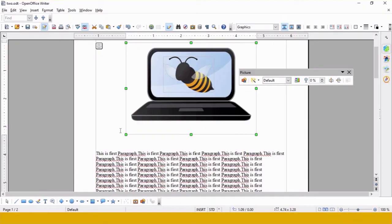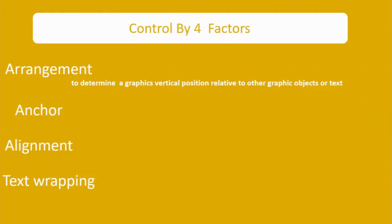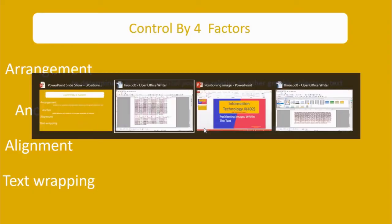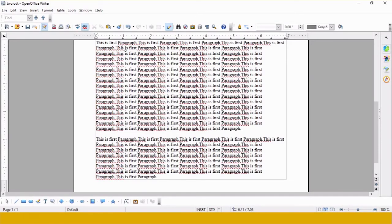This is how we use the arrangement option. The second option is Anchor. In the case of anchor, a graphic is associated either to a page, to a paragraph, or to a character. When it is associated to a page, if you perform any changes inside the page — either entering text or deleting text — the graphic is not going to change its position.